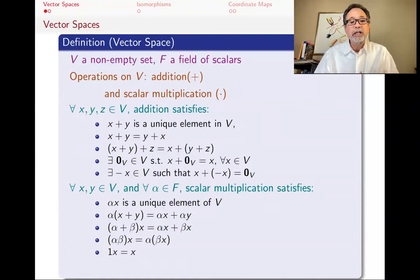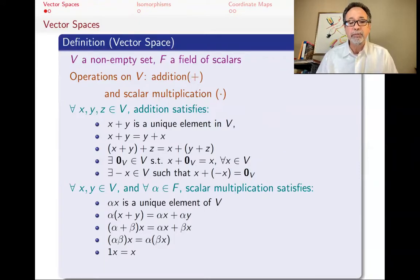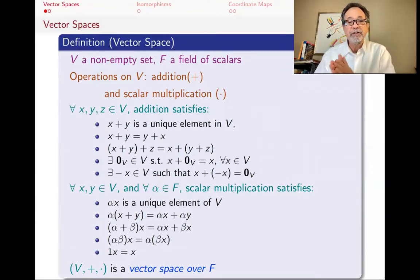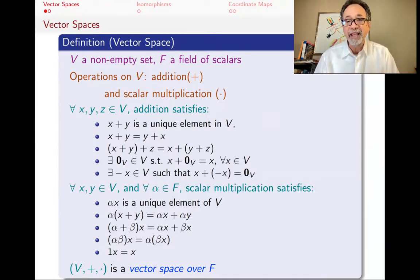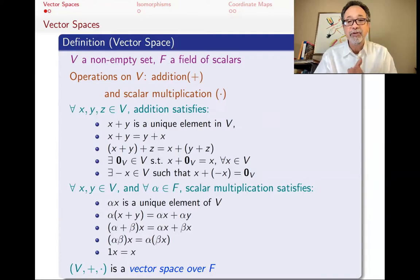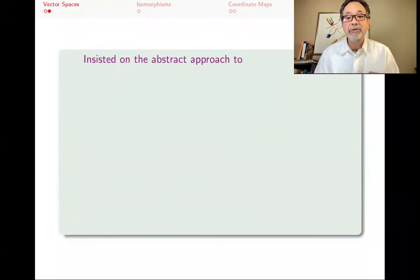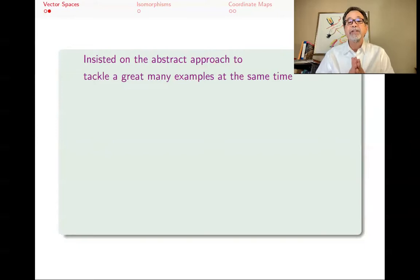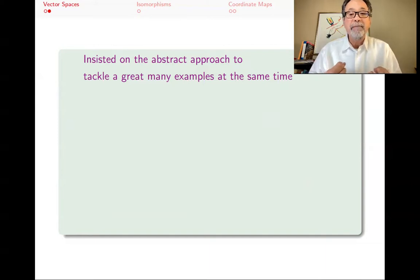The conditions that we put on these operations were not too stringent — they just seemed like quite reasonable conditions to have on addition and scalar multiplication. Whenever you have a non-empty set, a field of scalars, and two operations of addition and scalar multiplication, we call that a vector space over the field F. This was an abstract notion — we did not identify what the elements of our set are, or even what the operations are. We insisted on this abstract approach so that we could tackle a great many examples at the same time.